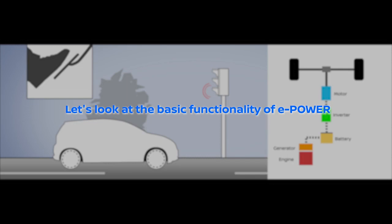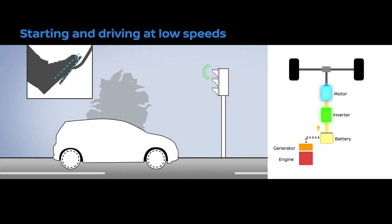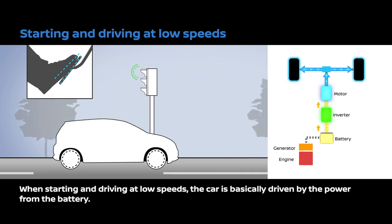Let's look at the basic functionality of e-Power. When starting and driving at low speeds, the car is basically driven by the power from the battery.